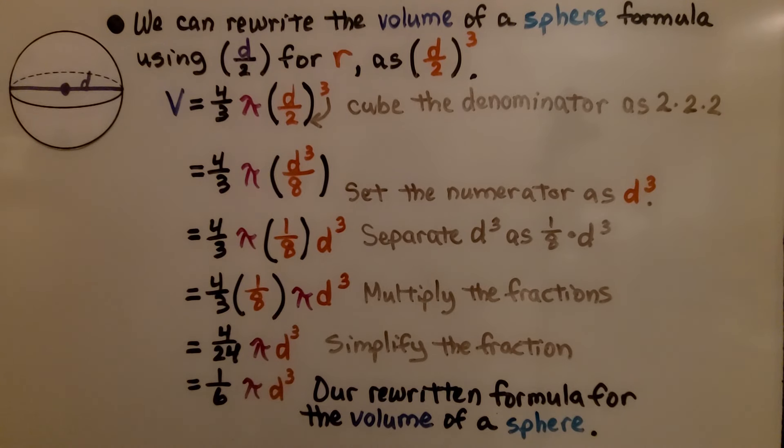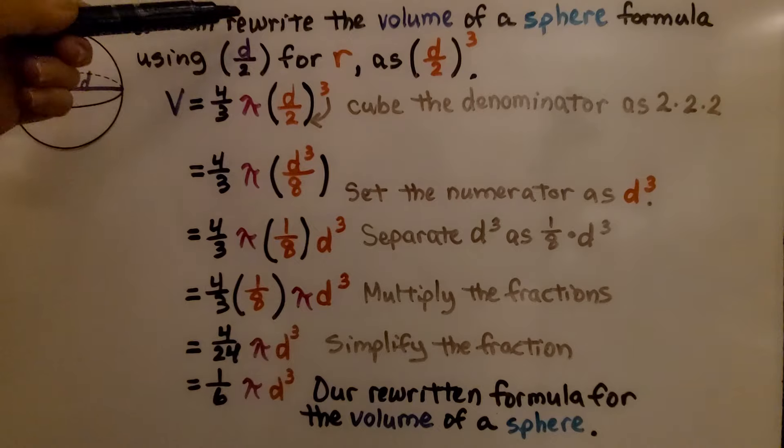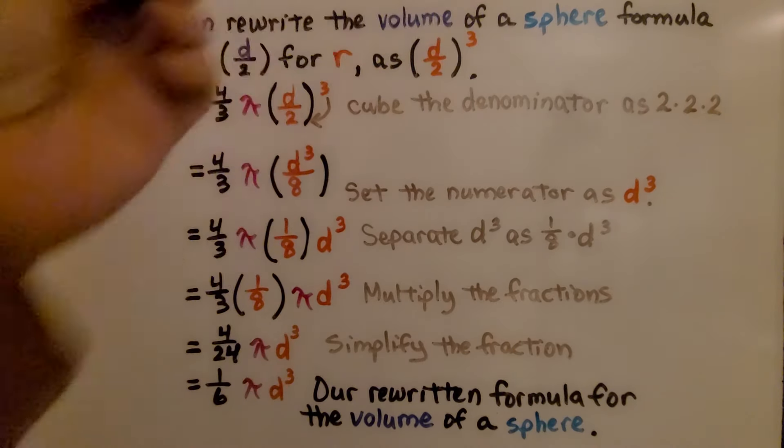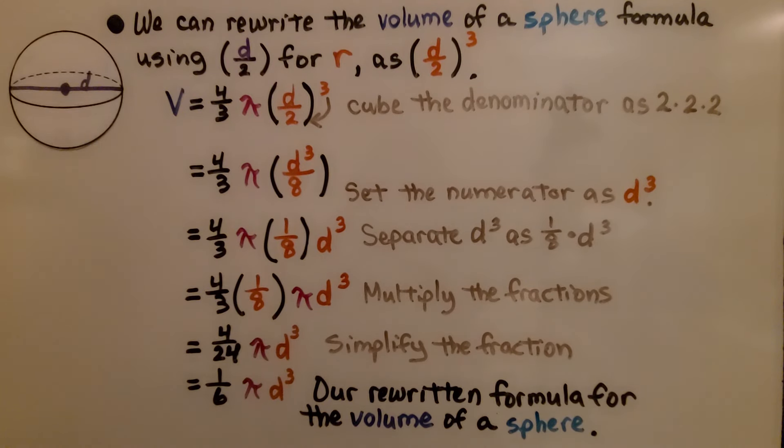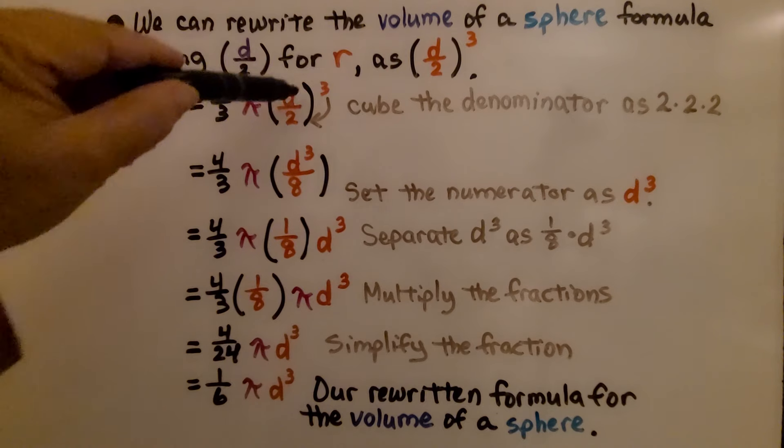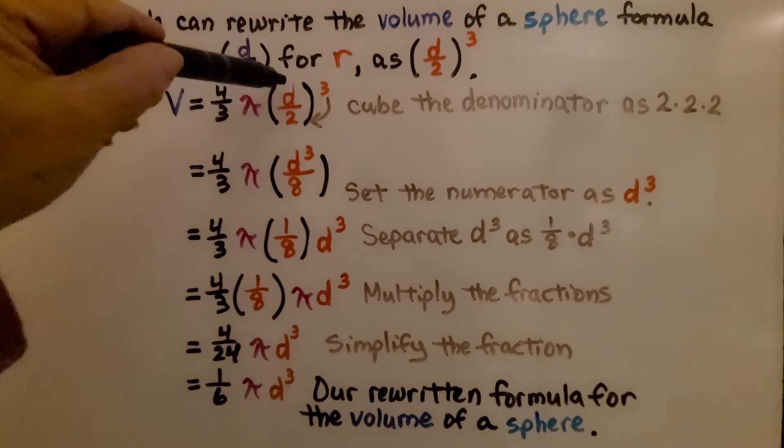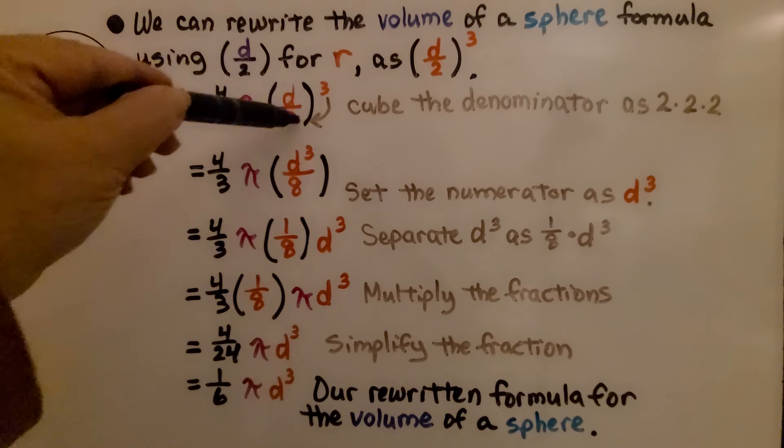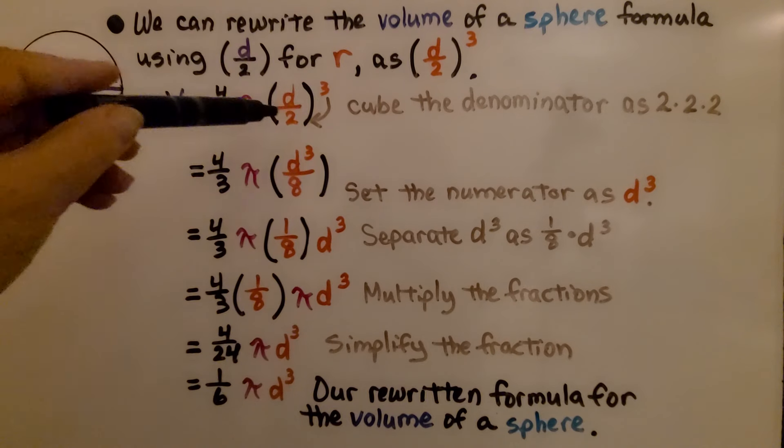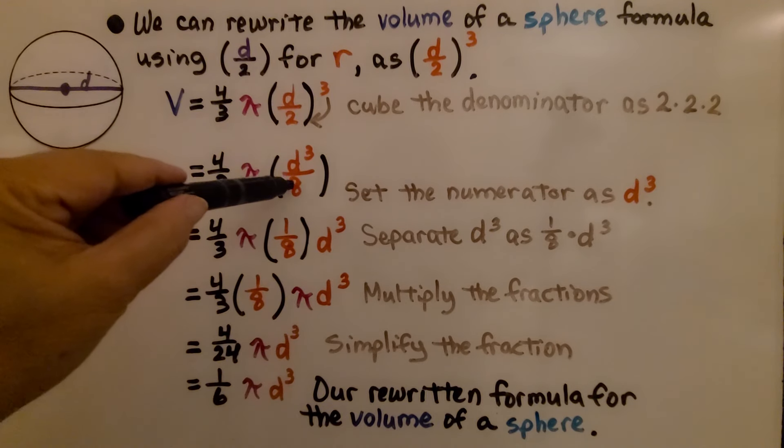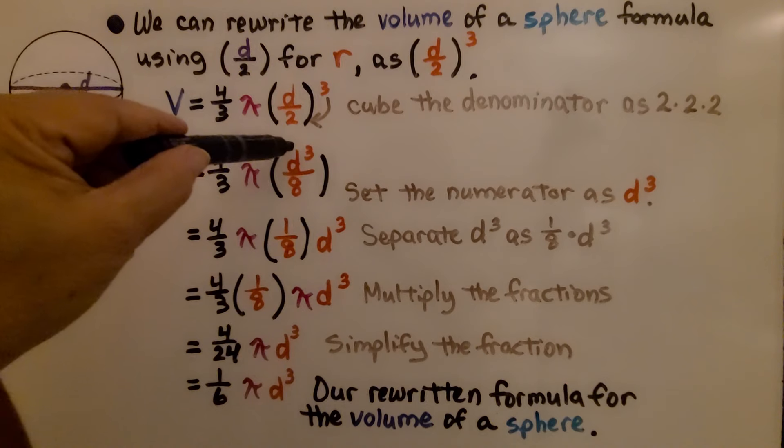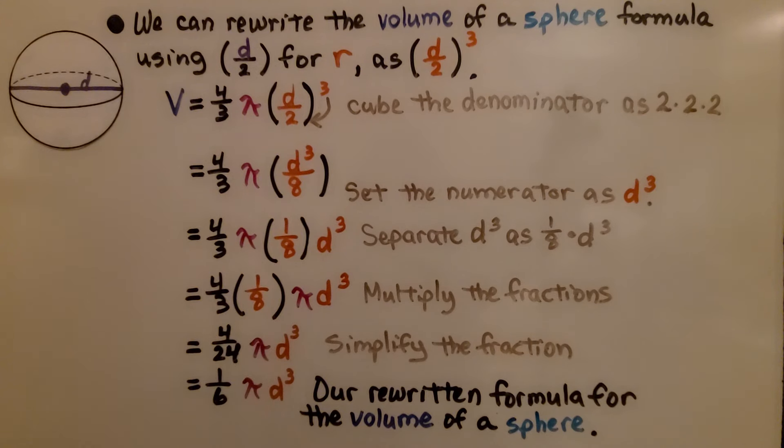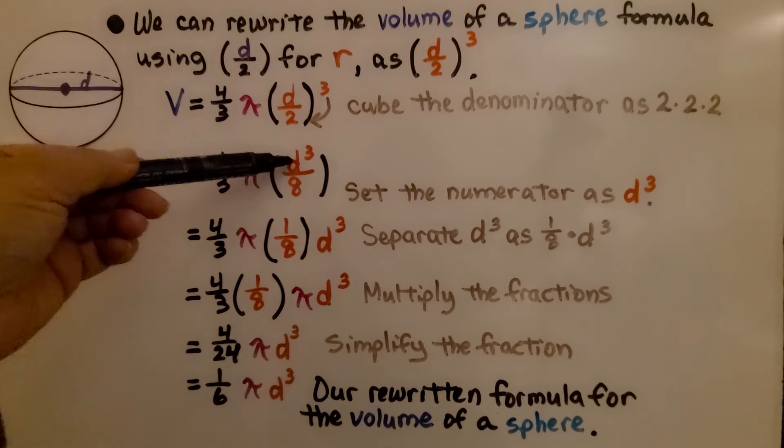We can rewrite the volume of a sphere formula using d divided by 2 for r as d divided by 2 cubed, because we have r cubed. What we do is we cube the denominator. We don't know the value of d, so we're just going to do 2 times 2 times 2, the denominator cubed. That's going to give us an 8 for our denominator, and whatever d is, whatever the diameter is, still needs to be cubed, so we write it as d cubed over 8. We set the numerator as d to the third power.